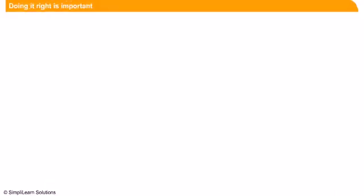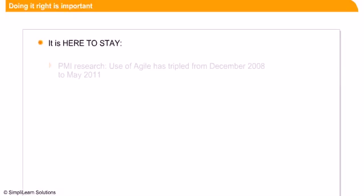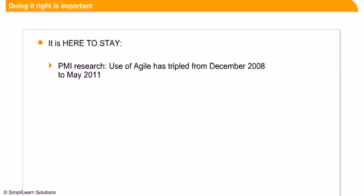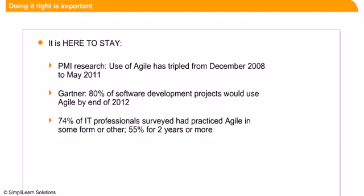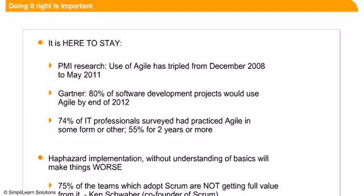Some survey facts highlight why Agile is here to stay. PMI research found that the use of Agile tripled from December 2008 to May 2011. Gartner noted that about 80 percent of software development projects would use Agile by the end of 2012. While Agile brings many benefits, success requires a full understanding of its concepts and methodology.